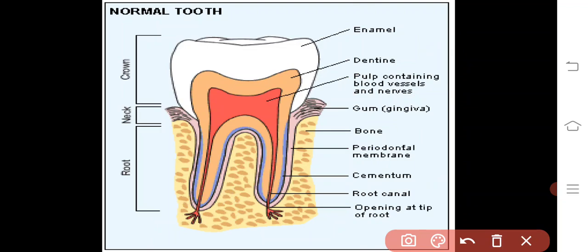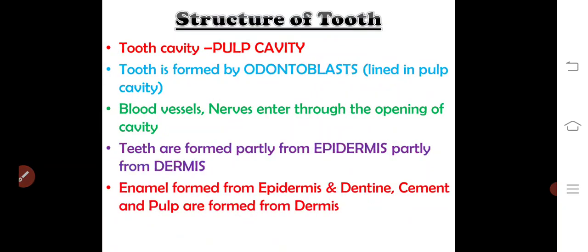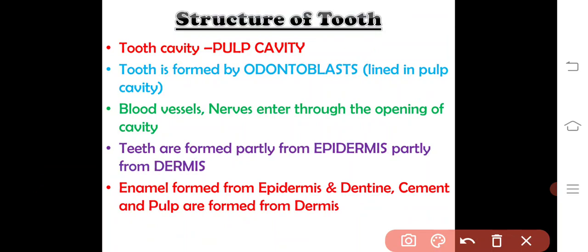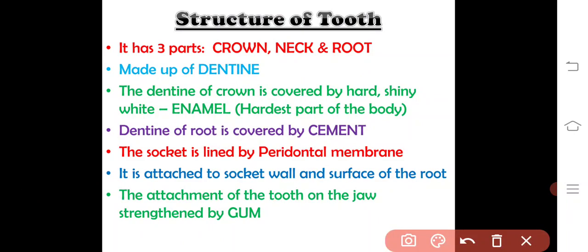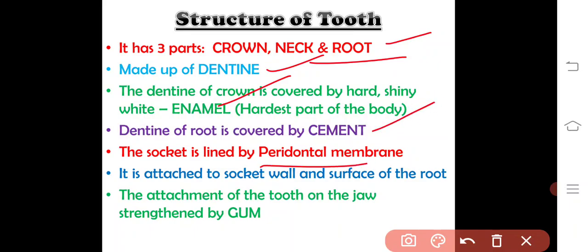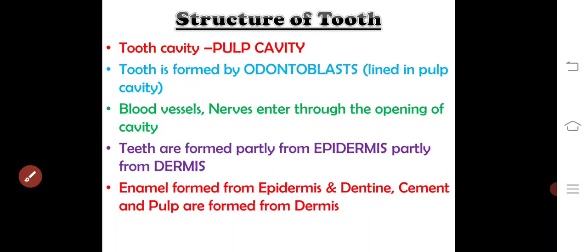Regarding the origin of teeth: they are partly formed by the epidermis and partly by the dermis. Enamel is formed from the epidermis, whereas dentin, cementum, and the pulp are formed from the dermis. The important structural components to remember are: dentin, enamel, cementum, periodontal membrane, gum, pulp cavity, and odontoblast cells — with origin from epidermis and dermis.